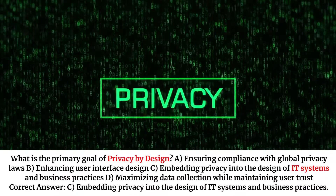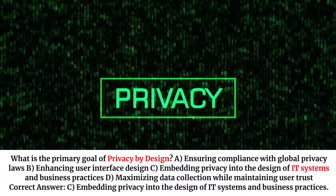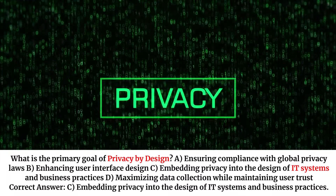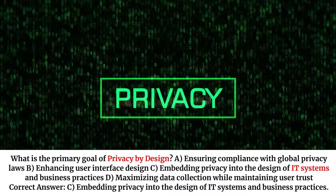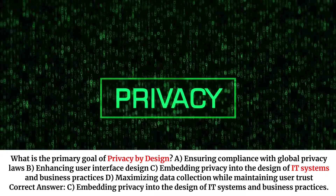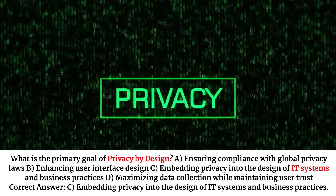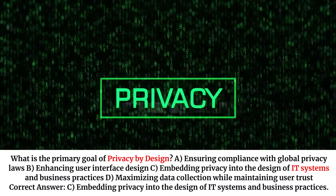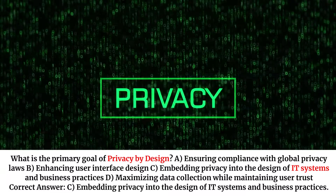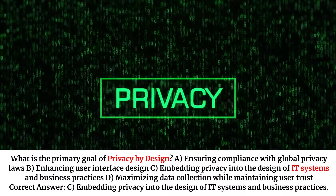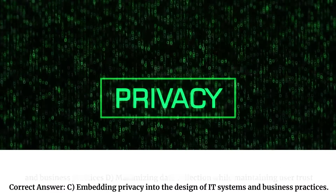What is the primary goal of privacy by design? A. Ensuring compliance with global privacy laws. B. Enhancing user interface design. C. Embedding privacy into the design of IT systems and business practices. D. Maximizing data collection while maintaining user trust. Correct answer: C. Embedding privacy into the design of IT systems and business practices.